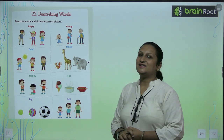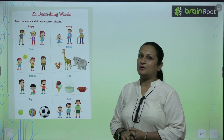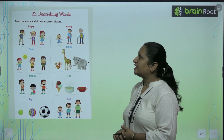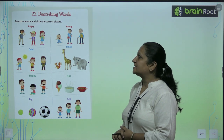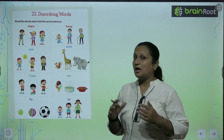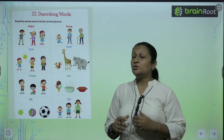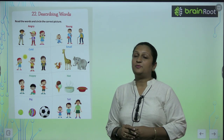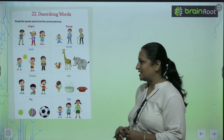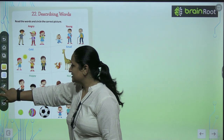Now children, let's start with describing words, that is chapter number 22. Now read the words and circle the correct picture. So we have to read the words here and we have to circle out the matching picture. So let's get started.